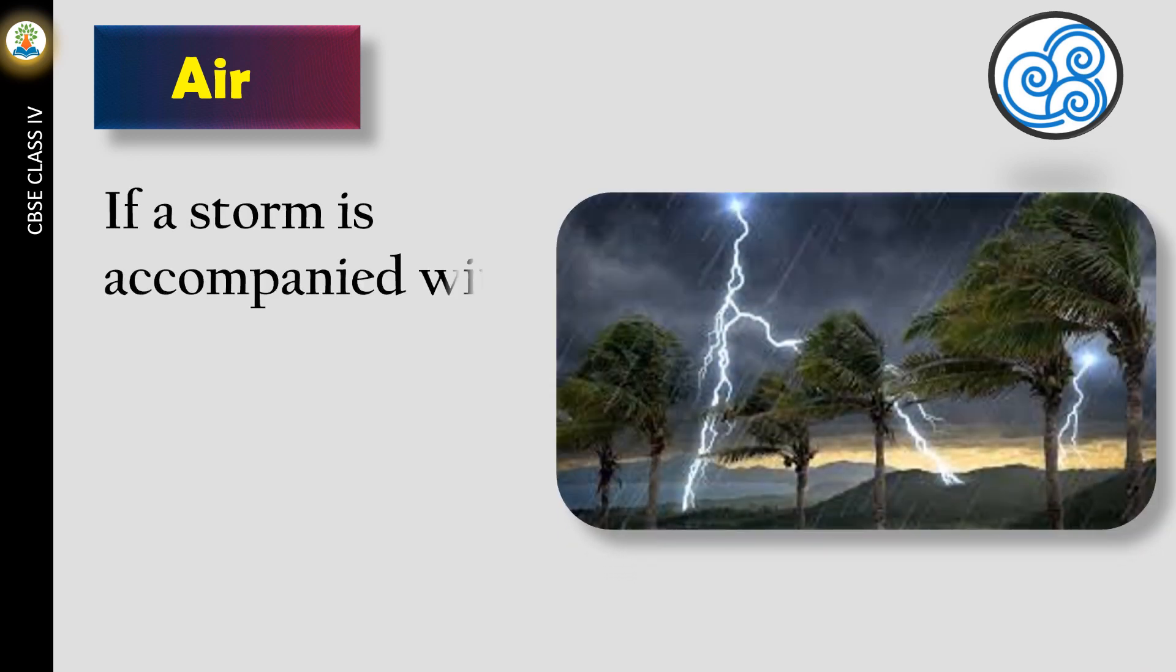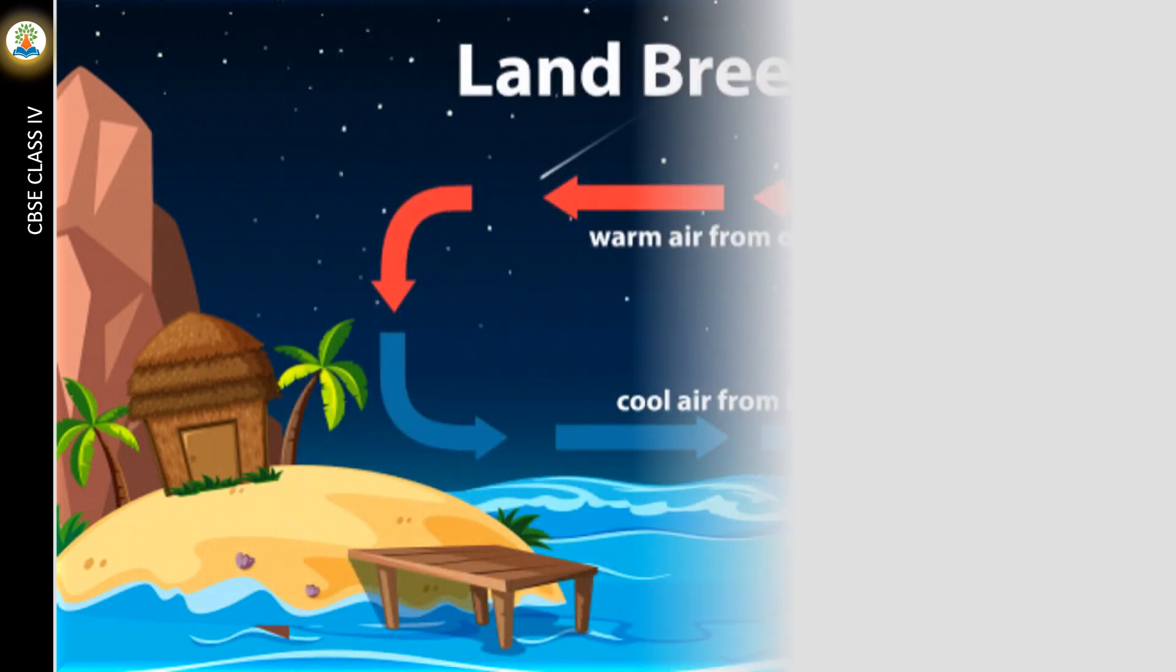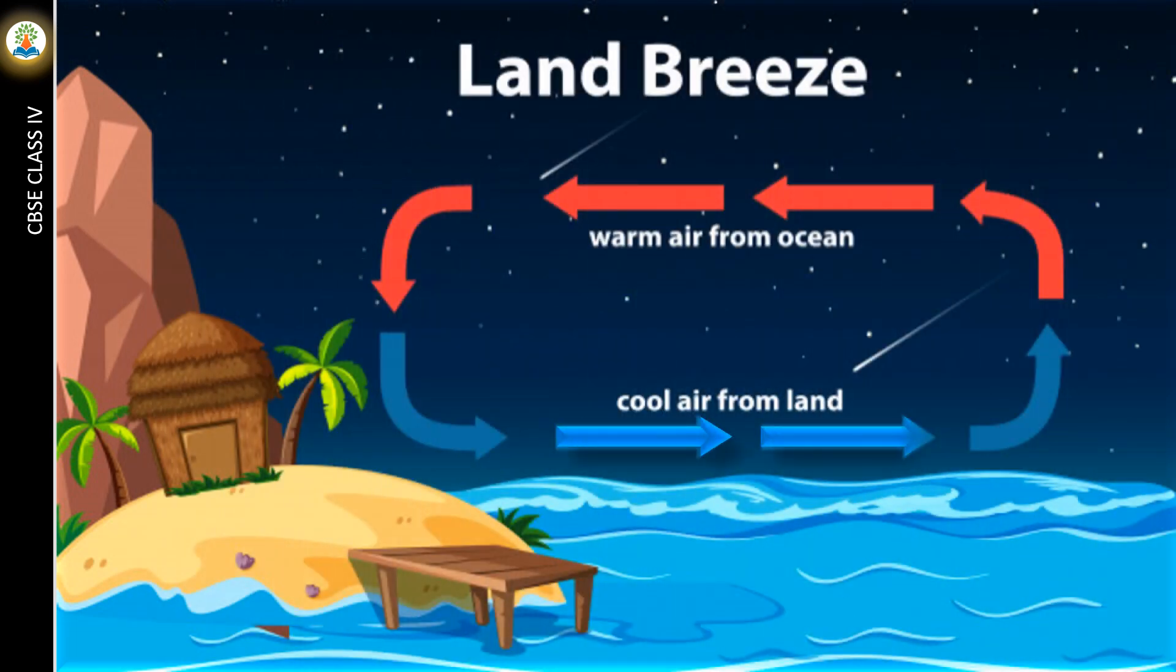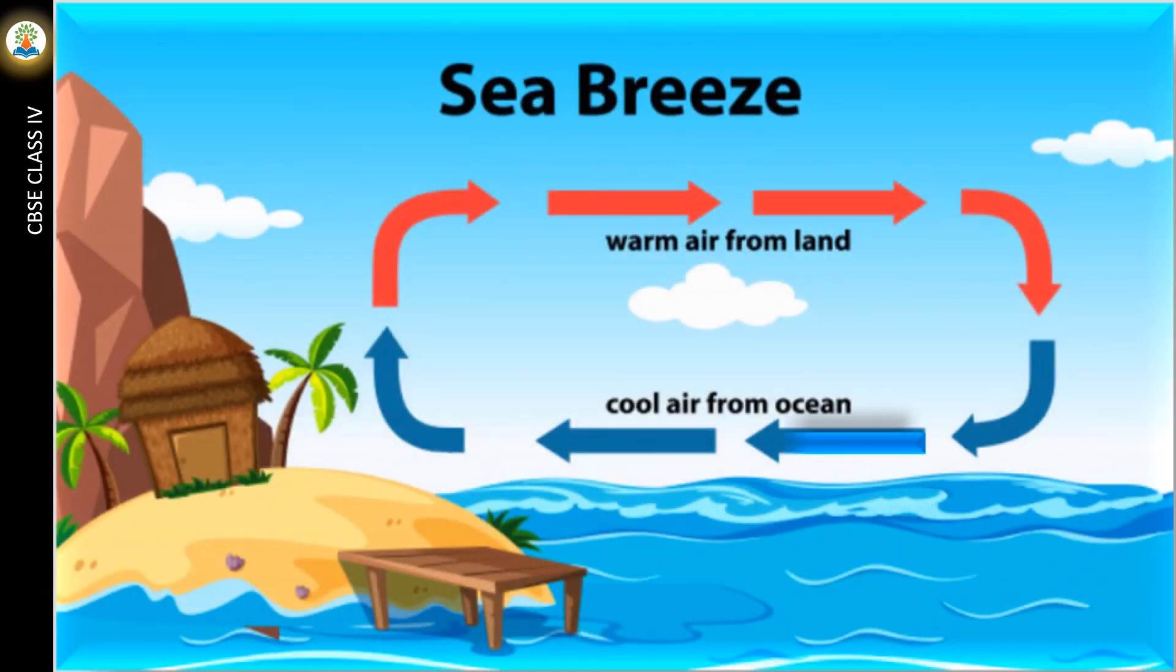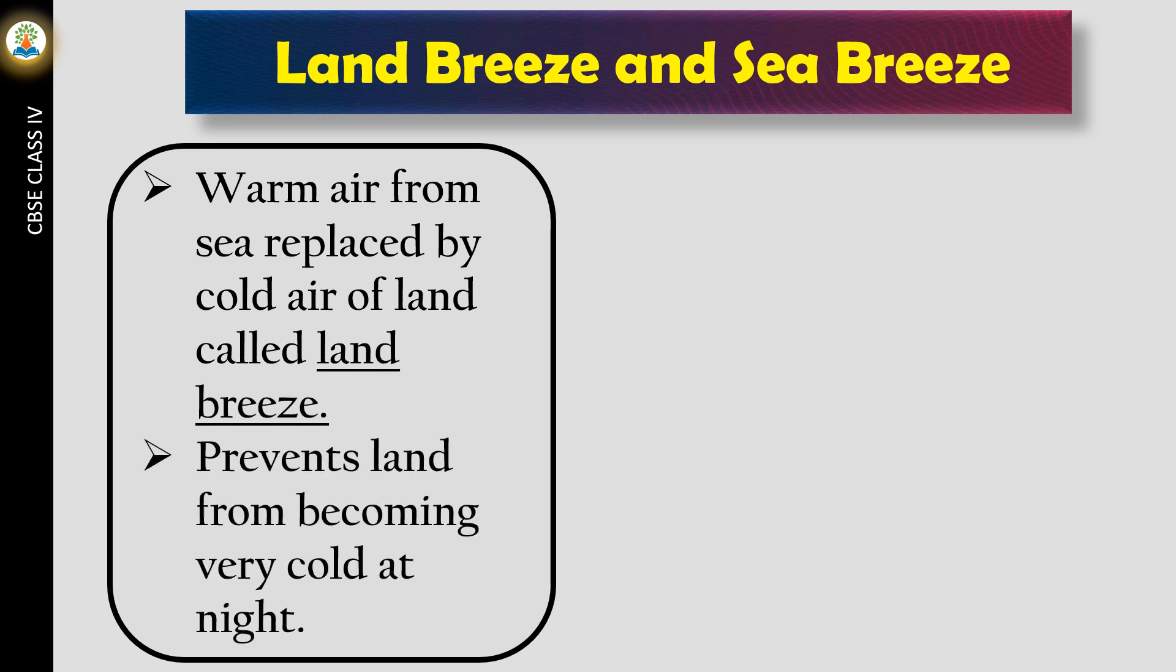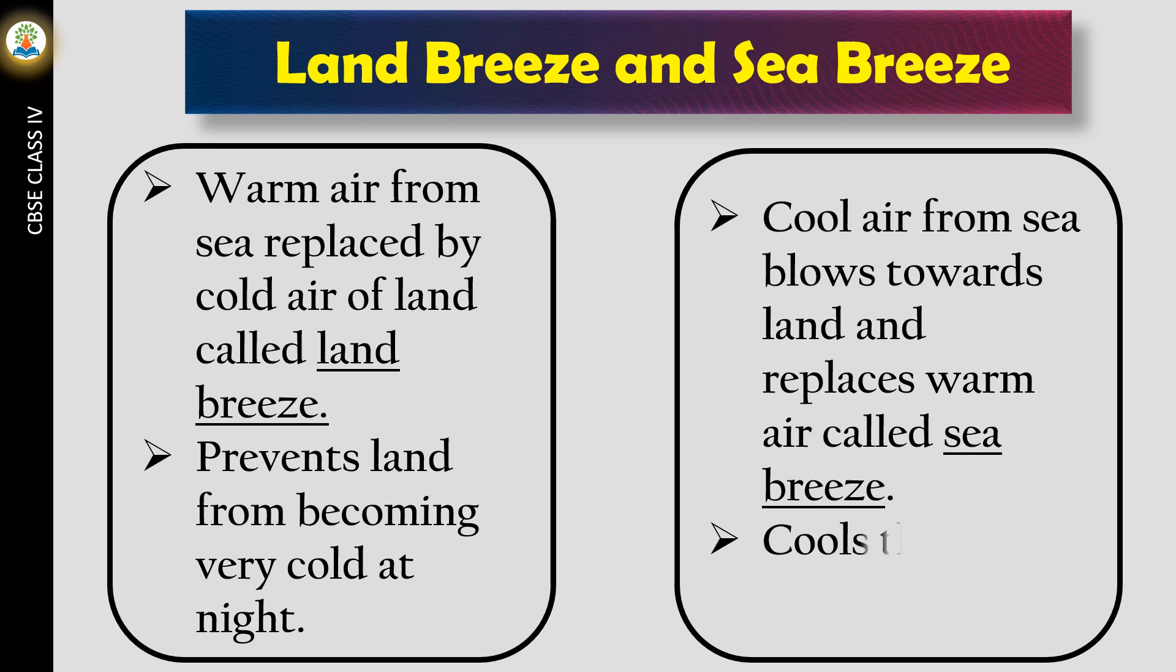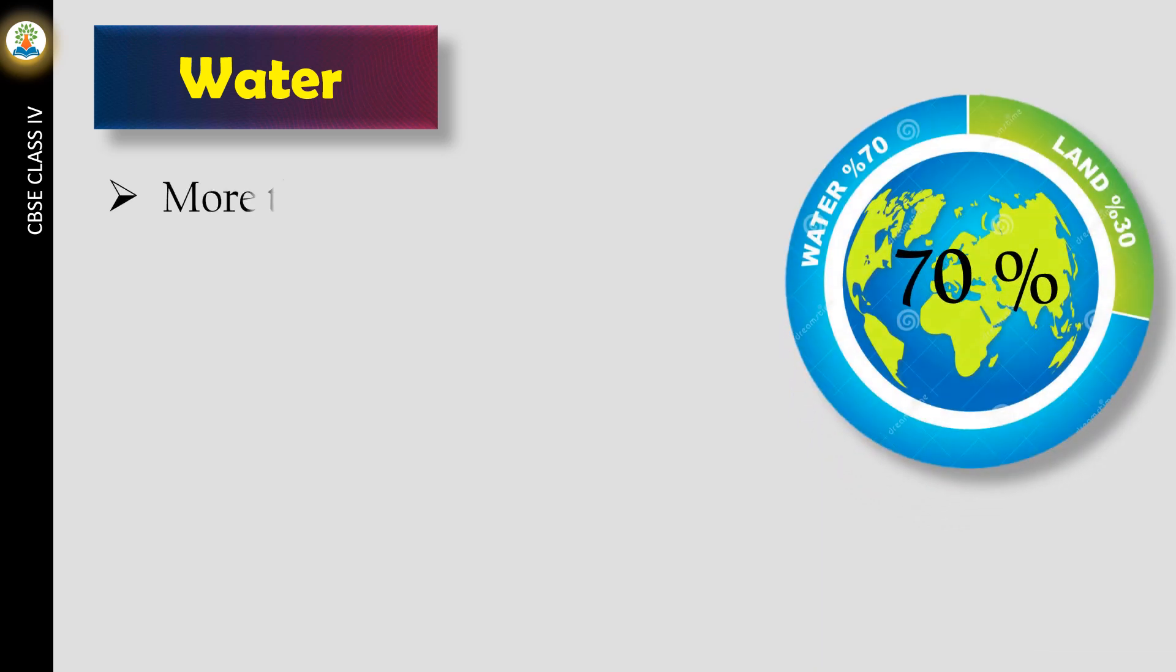If a storm is accompanied with thunder and lightning, then it is called a thunderstorm. At night, land cools down faster than the sea. The air above the sea is warmer, which rises up, and the cold air from the land blows towards the sea. During the day, when sun shines, the land gets heated up faster than the sea. The air above the land becomes warmer and rises up. The cool air from sea blows towards land and replaces warm air, called sea breeze, which cools the land during the day.